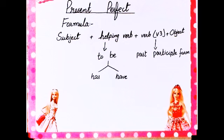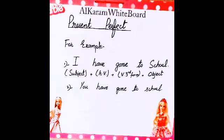Ab hum present perfect tense mein simple sentence ka formula dekhte hain. Sabse pehle aata hai subject, uske baad helping verb — helping verb mein hum has aur have use karte hain — uske baad verb use karenge aur verb ki hum third form, yani past participle form, use karenge. Uske baad aayega object. Formula: subject + helping verb + third form of verb + object. Example: 'You have gone to school' — tum school ja chuke ho. Go ki third form: go, went, gone. To school is the object.